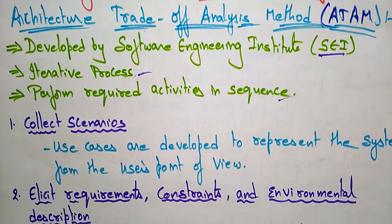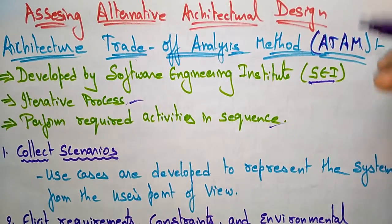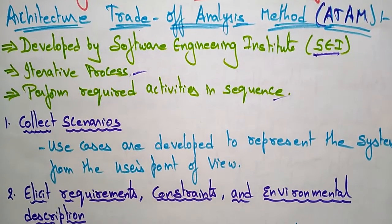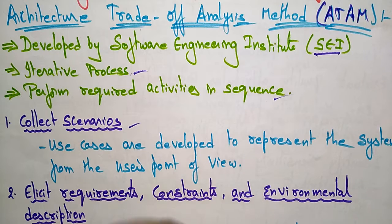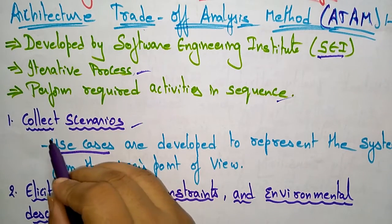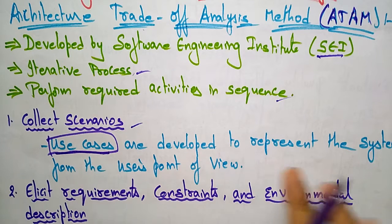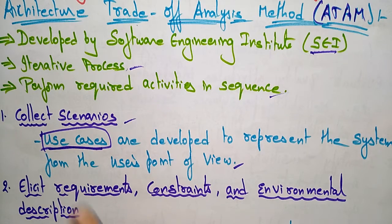How is the Architecture Trade-off Analysis Method used for assessing alternative architectural design? The steps followed to assess the alternative architecture design are: first, collecting the scenarios. The first step ATAM does is collect use cases. Use cases are developed to represent the system from the user's point of view. If customers can understand what the developers are going to do, it will be best for them to continue with the project.